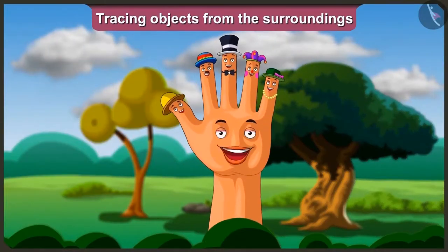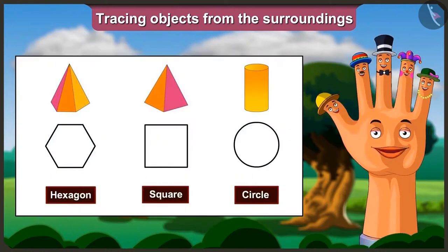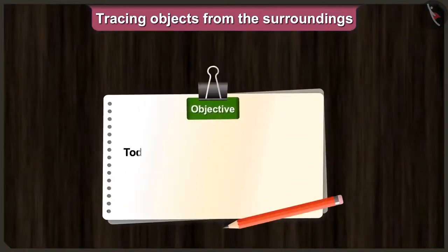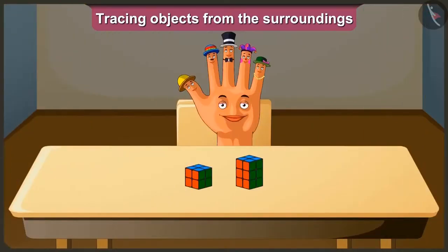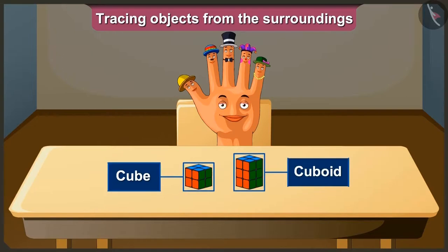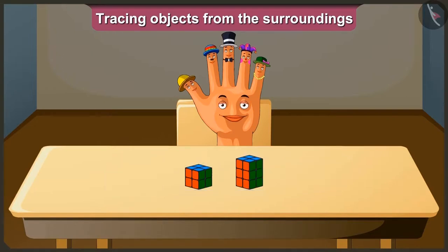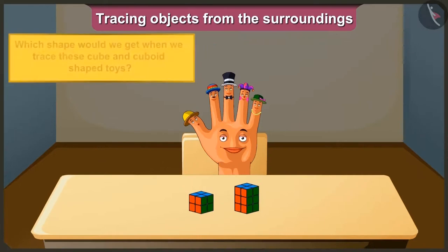Friends, in the last video you understood the shapes we get when we trace objects from the surroundings. Today we will understand some interesting facts related to tracing objects. Hey Tallman, look! This is a cube-shaped toy and this is a cuboid-shaped toy. Now tell me, which shape would we get when we trace these cube and cuboid-shaped toys?